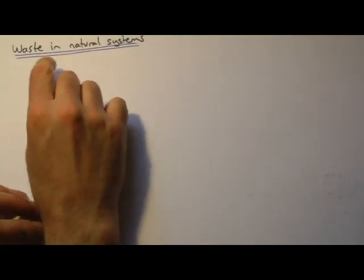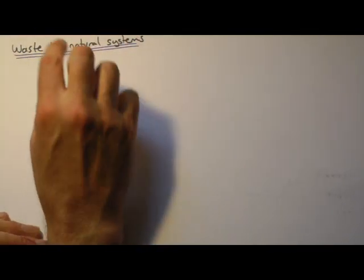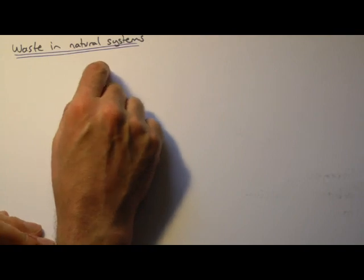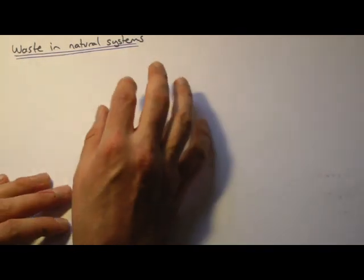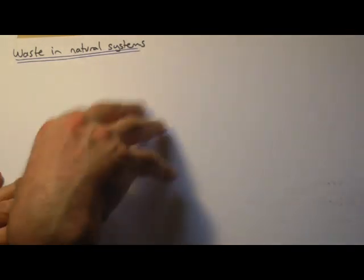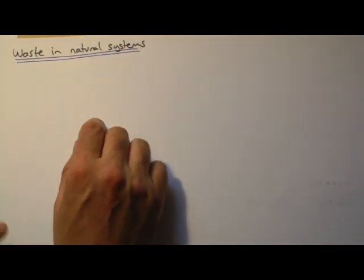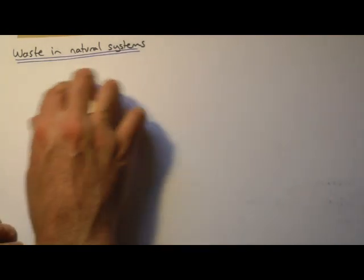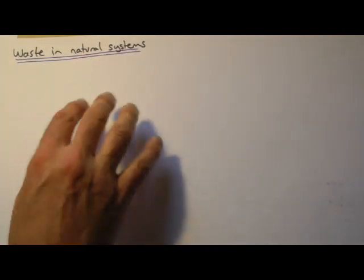So, continuing this idea of linear and closed loop systems, looking at a natural system again, what we really mean here is an ecosystem without human interference. Humans aren't coming in, taking things out and using them to make various products. We're talking here as if there's no human interference.